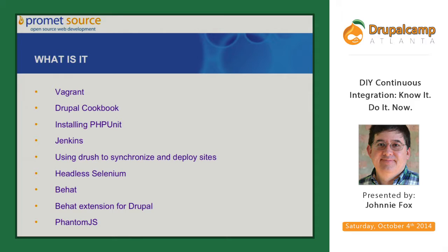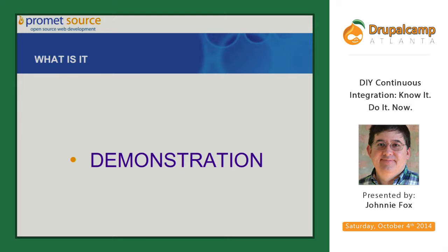We use Jenkins. We use Drush to sync and deploy sites. Headless Selenium with PhantomJS works with VHAT for browser testing. For things like being on a page and clicking into a field — especially if you've got JavaScript — you need something to automate the browser. VHAT is a testing framework; it's very English language-based. There's a Drupal extension framework for it. VHAT is really the most exciting part of the continuous integration work we've done.